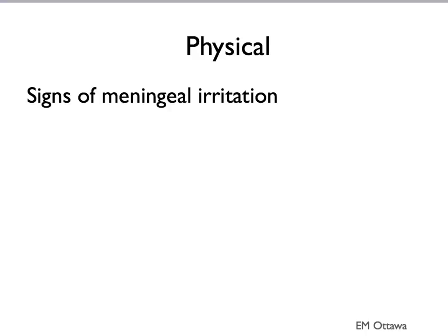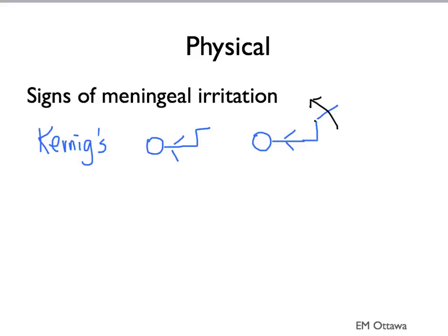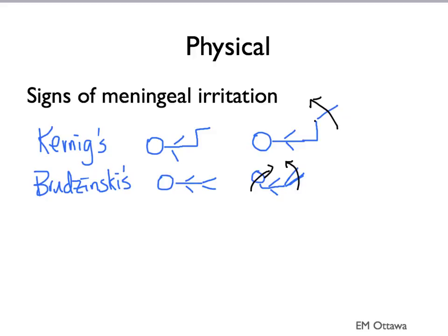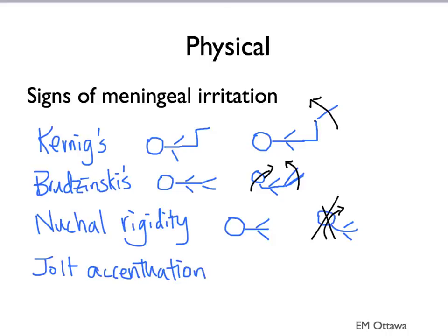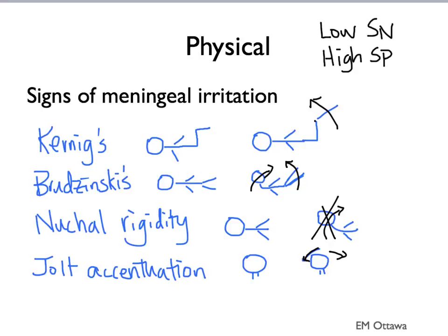On examination, we also look for any signs of meningeal irritation. The first is Kernig's sign, where the patient's knee and hip are bent at 90 degrees and extension of the knee is painful. Brudzinski's sign is when the patient's neck is flexed and they lift their legs involuntarily. Nuchal rigidity is when the patient has difficulty flexing their neck. Jolt accentuation is when moving the patient's neck quickly increases their discomfort. All of these tests have low sensitivity and high specificity — if present, meningitis is more likely, but absence does not rule it out.